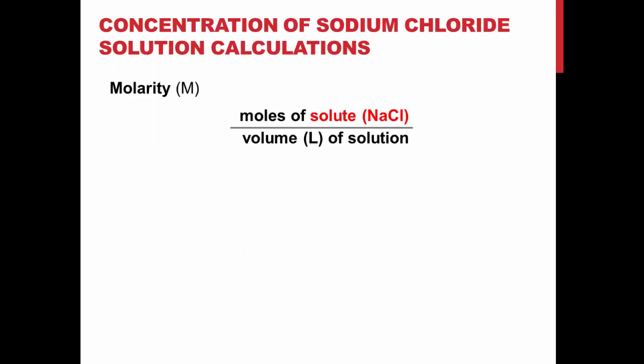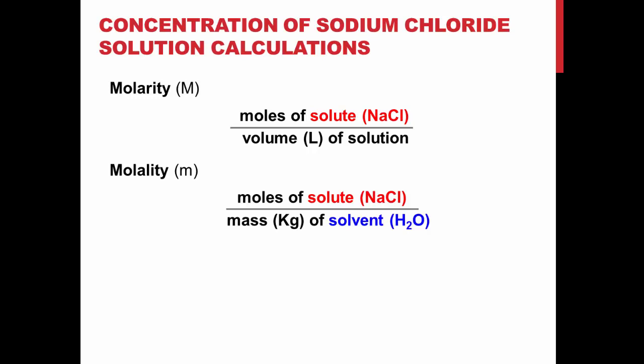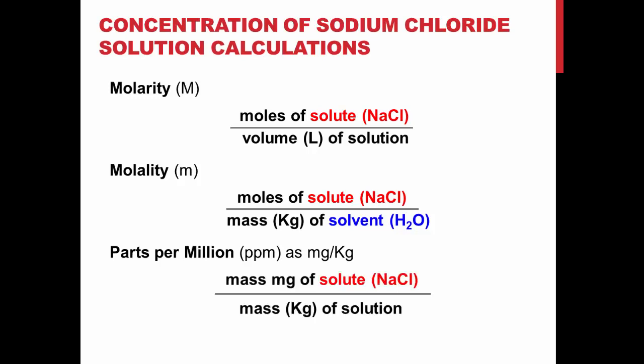Molarity is calculated by dividing moles of sodium chloride by the volume in liters of the solution. Molality is determined by the moles of the solute, sodium chloride, divided by the mass in kilograms of the solvent, water. Parts per million is the mass of solute in milligrams divided by the mass of the solution in kilograms.